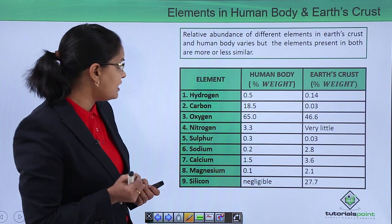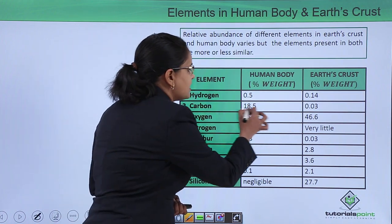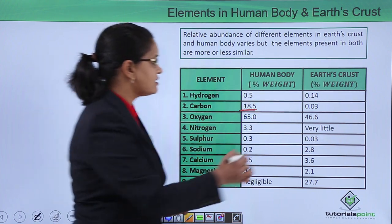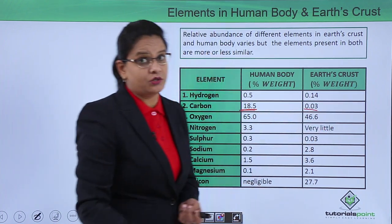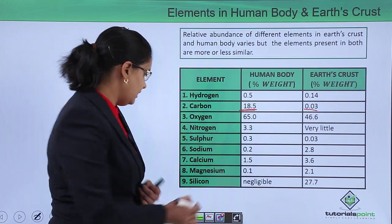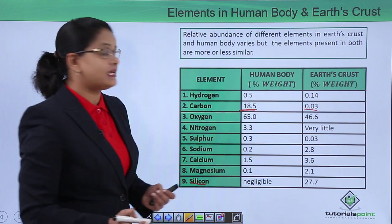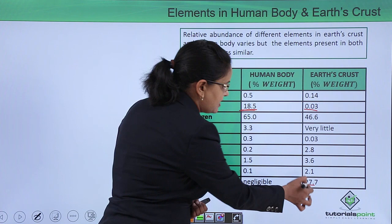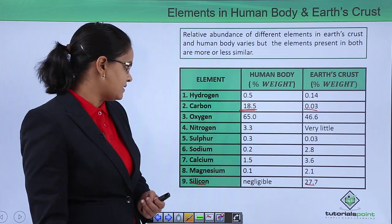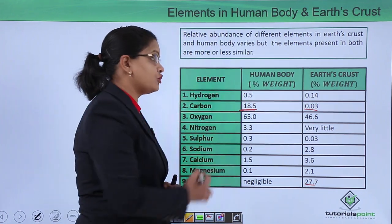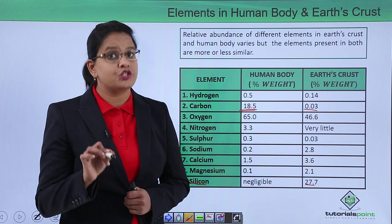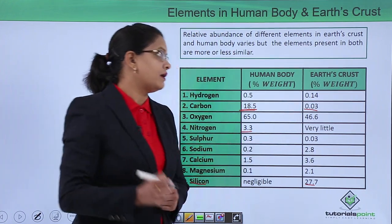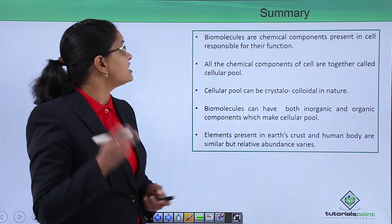For example, carbon in the human body is 18.5%, but in the earth's crust it is around 0.03%. Similarly, silicon in the human body is negligible, but in the earth's crust it is around 27.7%. Looking at nitrogen — in the human body nitrogen is very important at 3.3%, but in the earth's crust it is very little.